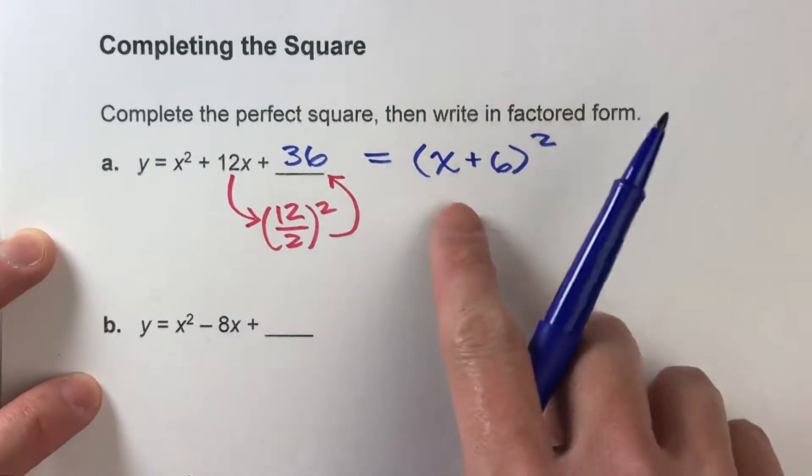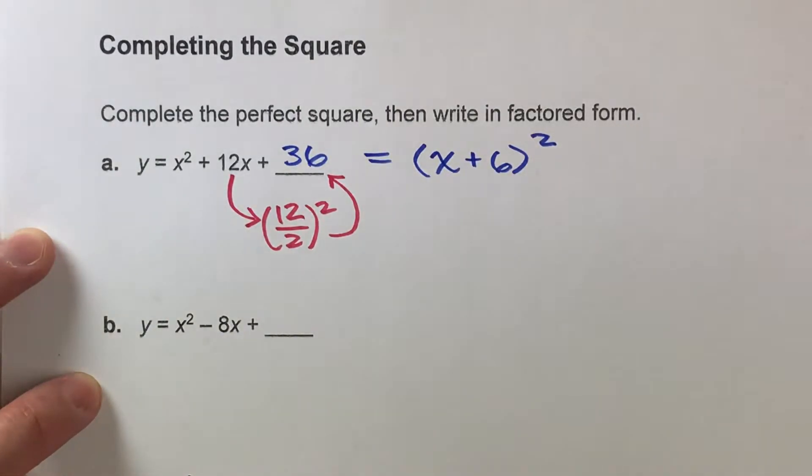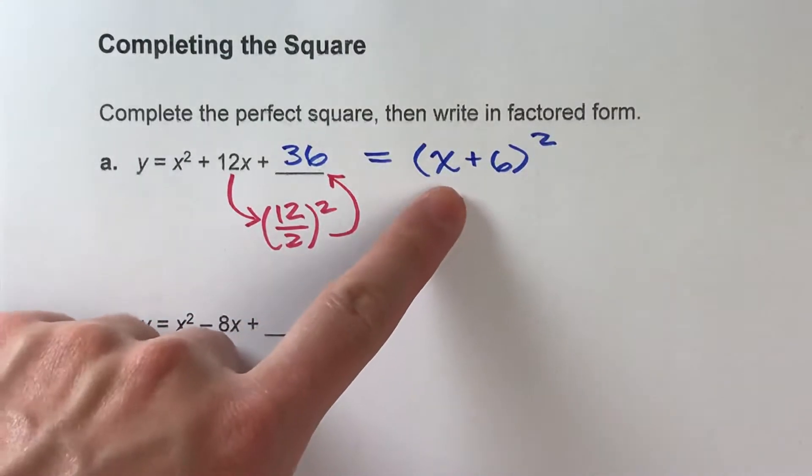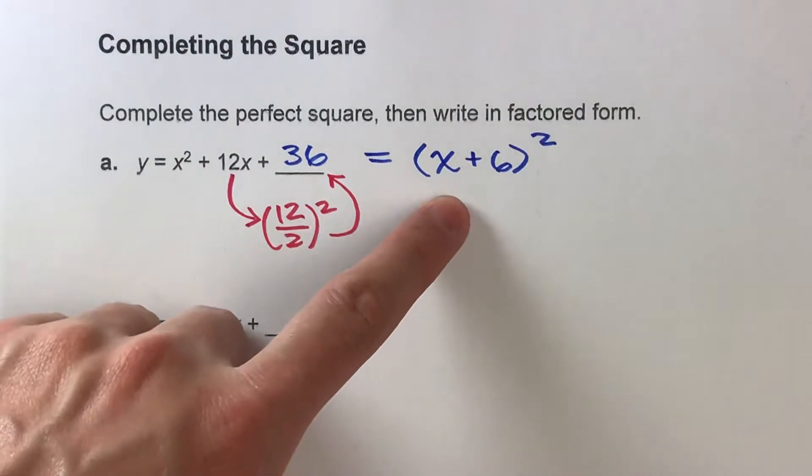Alright, so x plus 6 squared is the factored form and this proves that this is a perfect square. Now if you're not sure that that actually works, that this actually is this, you can always multiply this out and test it for yourself.